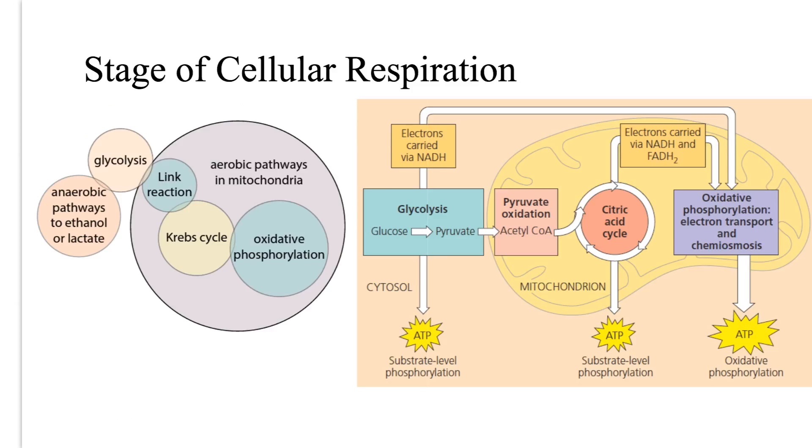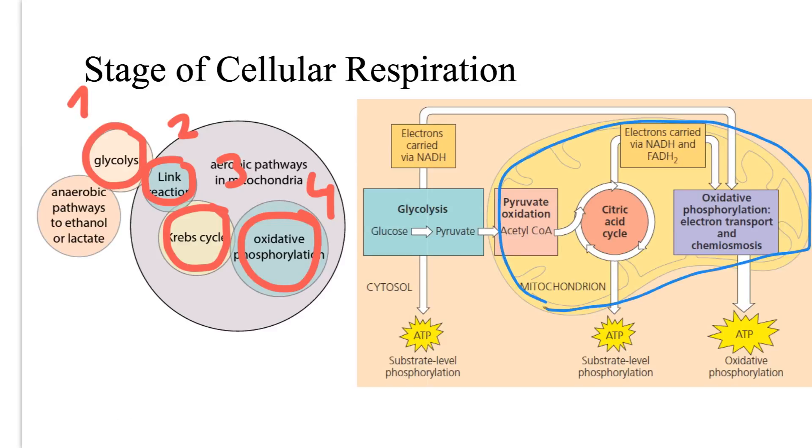Cellular respiration can be divided into four stages. Glycolysis, link reaction, Krebs cycle and oxidative phosphorylation. Let's point the locations of these four stages in the cell. So this whole structure here is the mitochondrion. As you can see, glycolysis takes place in the cytoplasm and link reaction in the mitochondrion.